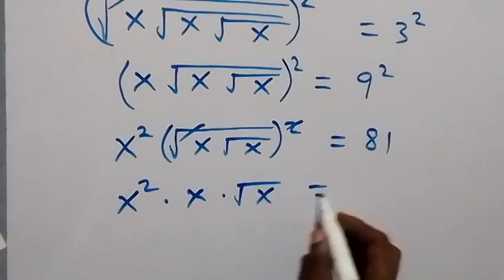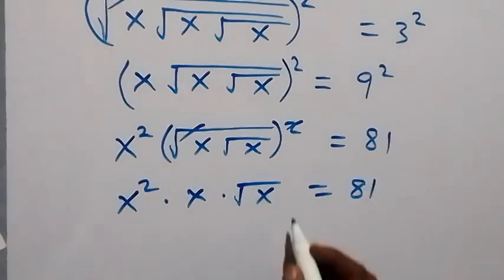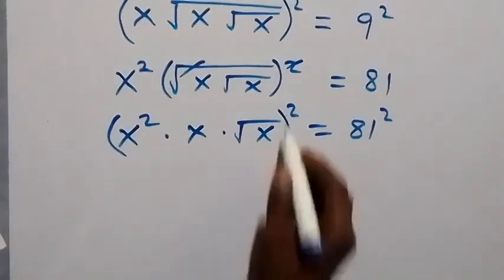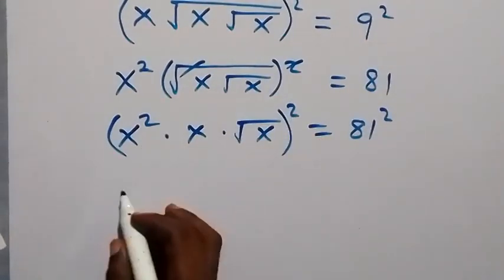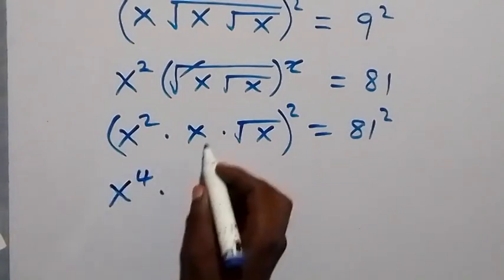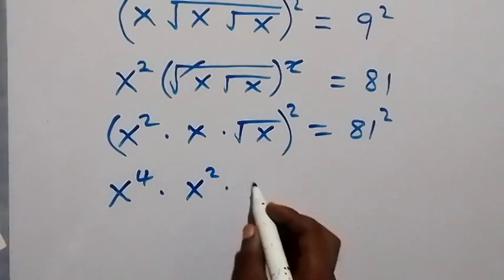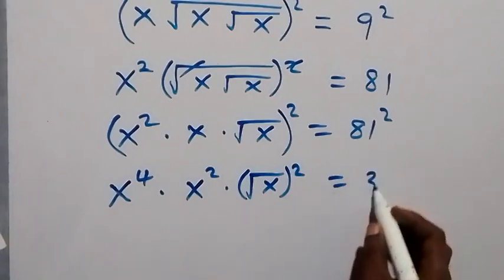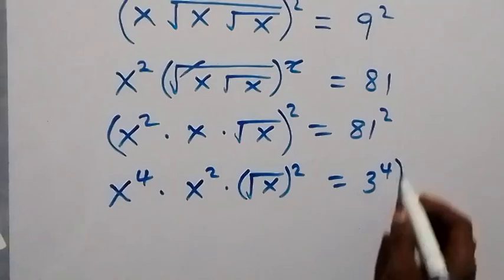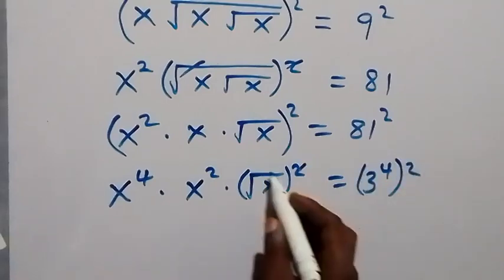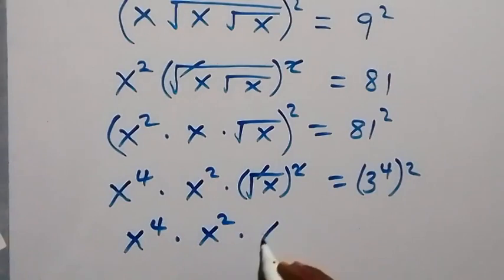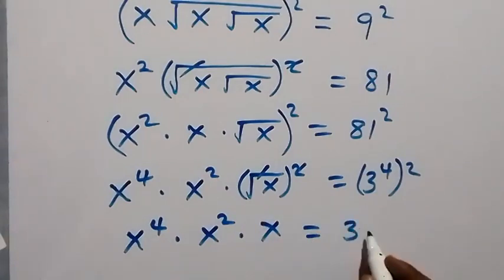From here we square both sides again. This square affects x squared giving x to the power 4, then affects x giving x squared, then affects root x giving x. We also write 81 as 3 to the power 4, so squaring gives 3 to the power 8. This leaves us with x to the power 4 times x squared times x equals 3 to the power 8.